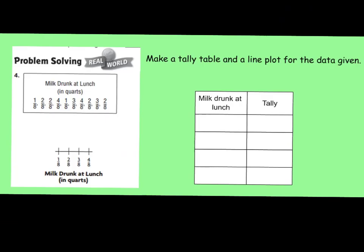Let's move on. For the next problem-solving question, number 4, the problem is about the milk drunk at lunch in quarts. Your survey looks like this, and you have a line plot titled Milk Drunk at Lunch in Quarts. However, you don't have a tally table, and sometimes it's easier to make a tally table before you fill in your line plot. So I'm going to model a tally table for you, and then we'll fill in the line plot together.